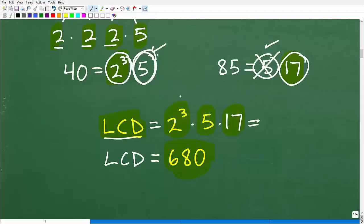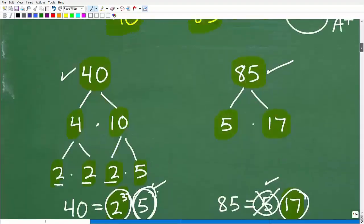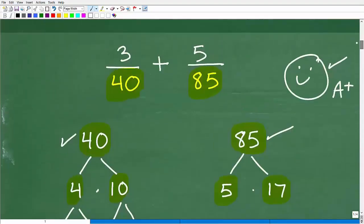So 2 cubed times 5 times 17. Of course, 2 to the third power here is 8. So 8 times 5 times 17. If you do that in your little calculator or just do that by hand, you get 680. That is the LCD. So we would have to go over here and change each one of these denominators into 680, and then do all the additional steps, multiplying the numerators and changing that fraction such that the denominator is 680.